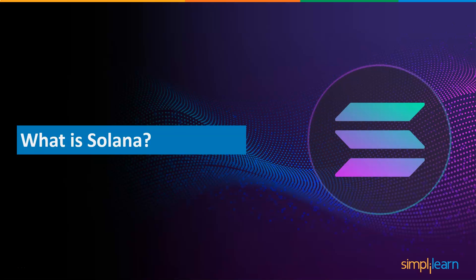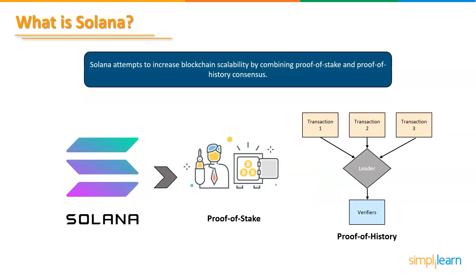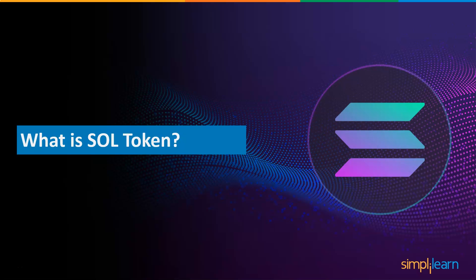Let's explore what is Solana. Solana is a cryptocurrency used to pay for transactions on a decentralized computing network. Solana attempts to increase blockchain scalability by combining proof-of-stake and proof-of-history consensus. As a result, Solana promises to be capable of processing 50,000 transactions per second while maintaining decentralization.